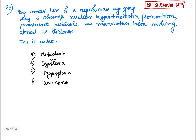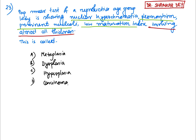Next question: a Pap smear of a reproductive-age female is showing nuclear hyperchromasia, pleomorphism, prominent nucleoli, and low maturation index involving almost all thickness. These features are nothing but dysplasia — dysplasia on Pap smear.